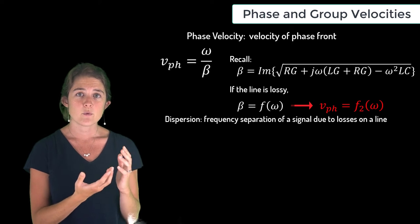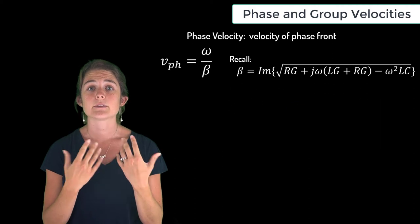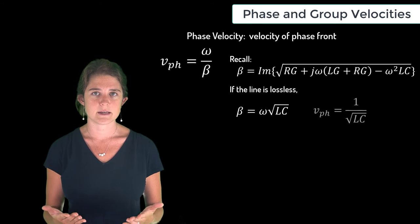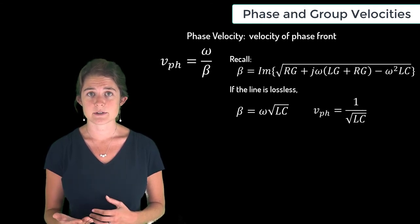However, if the line is lossless, beta is directly proportional to omega, and the frequency dependence cancels out. In this case, the frequencies are not dispersed and the signal is not distorted.